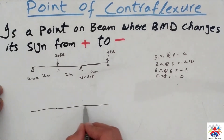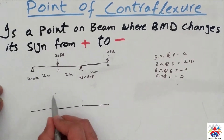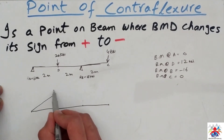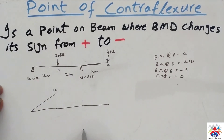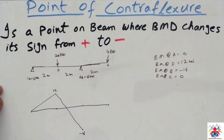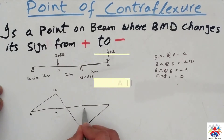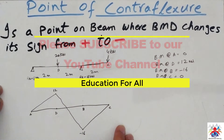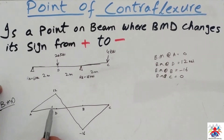Now we draw the bending moment diagram based on these numbers. At point A we have zero; at point D we have 12 kilonewtons, plotted above the baseline; at point B we have minus 16, plotted below. Connecting these points, we can see in the diagram that our bending moment has changed its sign from positive to negative.